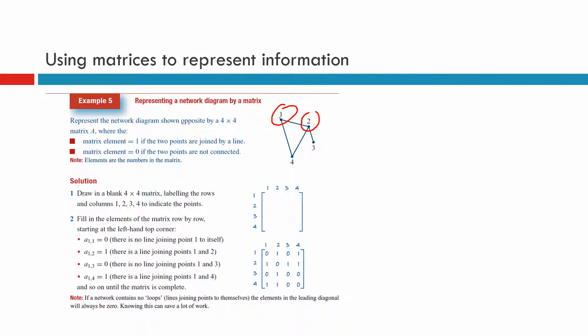So they're telling us that it's called A, where the matrix element is one if the two points are joined by a line and the matrix element is zero if the two points are not connected. Okay, well to connect one to point number one you need a loop, and you can see that one does not connect to itself, so we get a zero there. One only connects to number two and number four, so I'll put a one at number two and a one at number four.